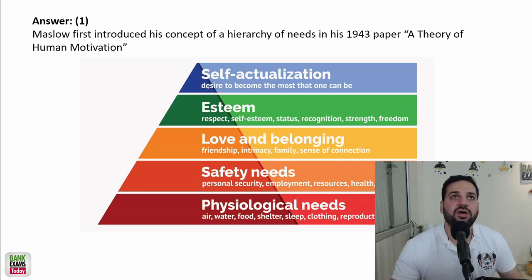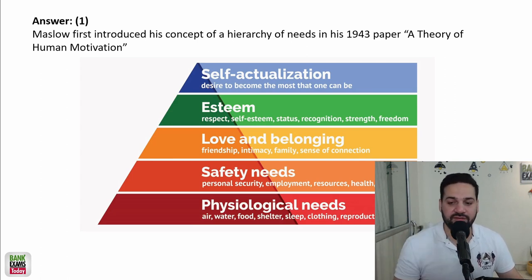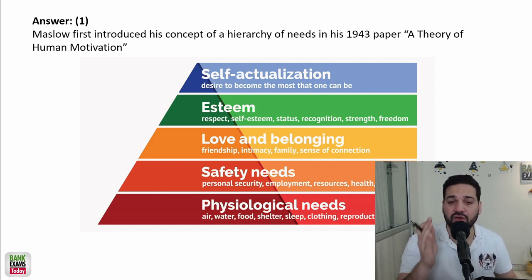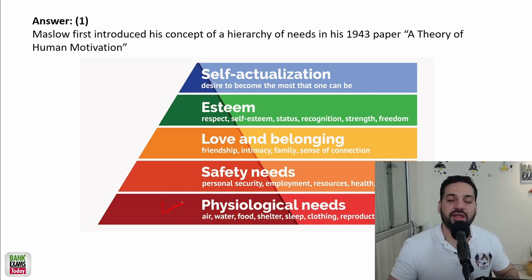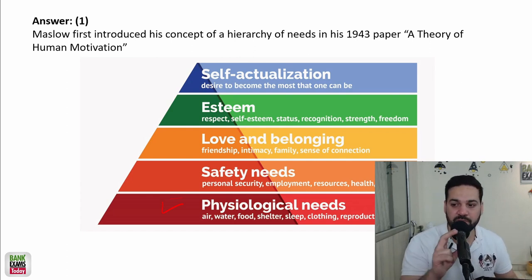Abraham Maslow gave us this theory. According to this theory, there is a hierarchy of needs. As a human being, your basic needs are food, water, and safety — these are your physiological needs, the most basic needs, the necessities of life.